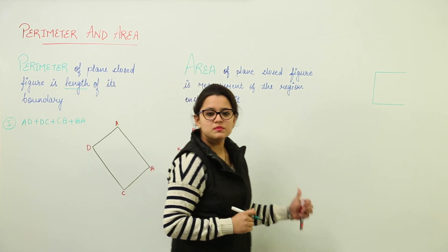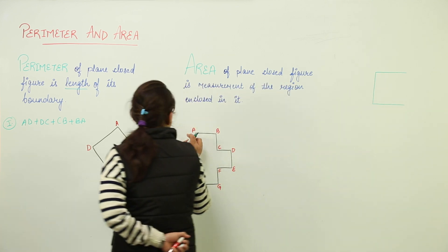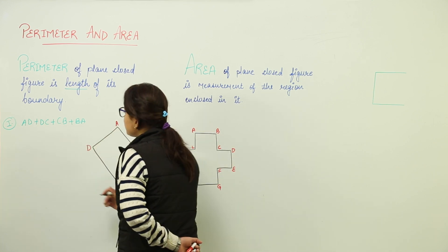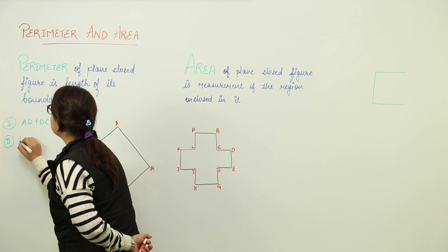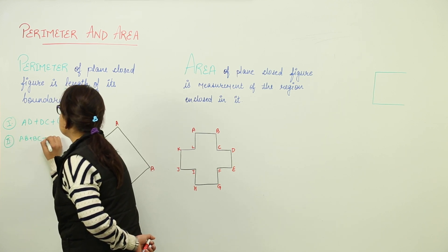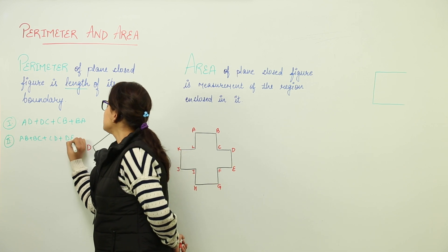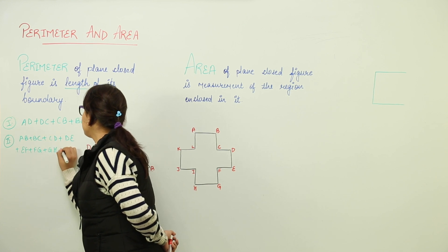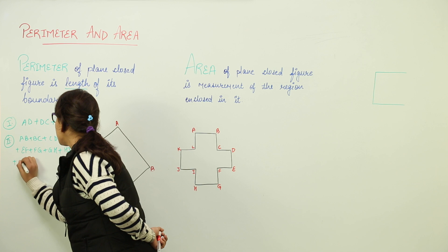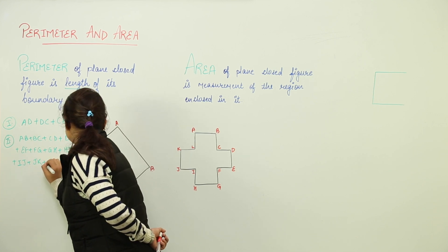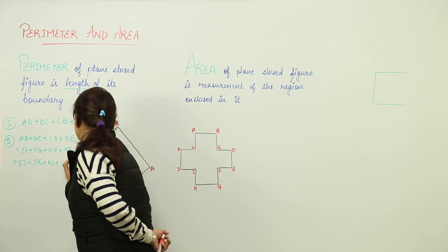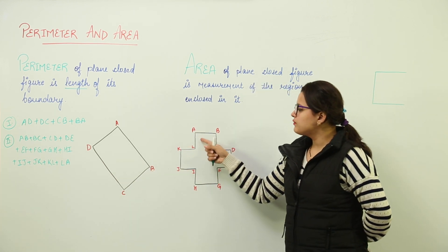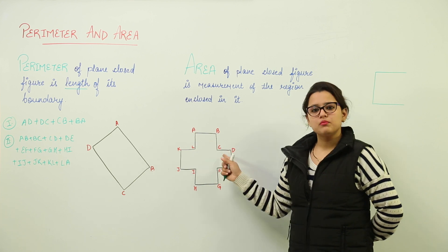The perimeter would be, you can start moving from this direction or you can start from that direction. The distance covered would remain the same. So, I am writing it that way. That would be AB plus BC plus CD plus DE plus EF plus FG plus GH plus HI plus IJ plus JK plus KL and last one L to A. So, that represents the perimeter of the other shape also. So, we have covered how much is the length of the boundary of both these shapes.